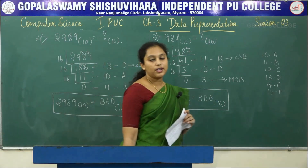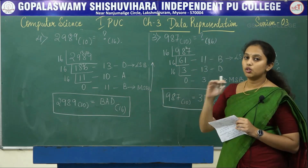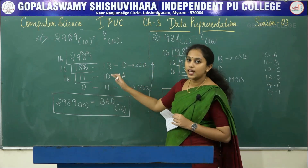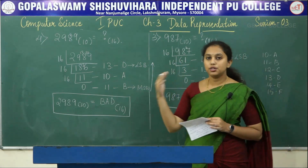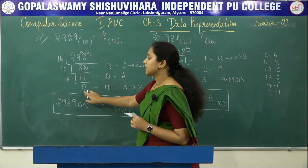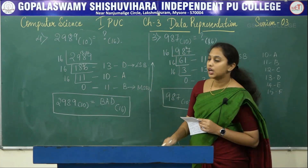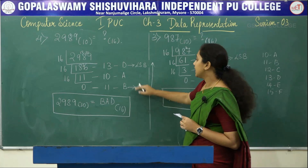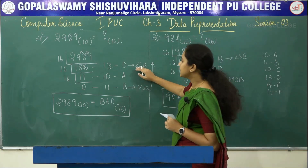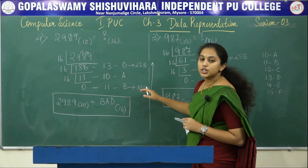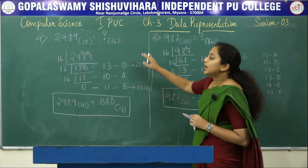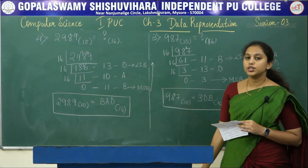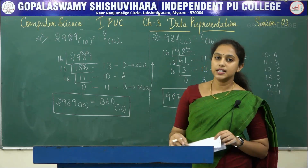So, while converting from decimal to hexadecimal: step 1, divide the given decimal number by 16; step 2, note down the quotient as well as the remainders; step 3, repeat steps 1 and 2 until the quotient becomes 0; step 4, mark down the MSB and LSB — the first remainder is the LSB and the last remainder is the MSB — then write the hexadecimal equivalent from MSB to LSB. This is how we convert from decimal to hexadecimal number system. Thank you.